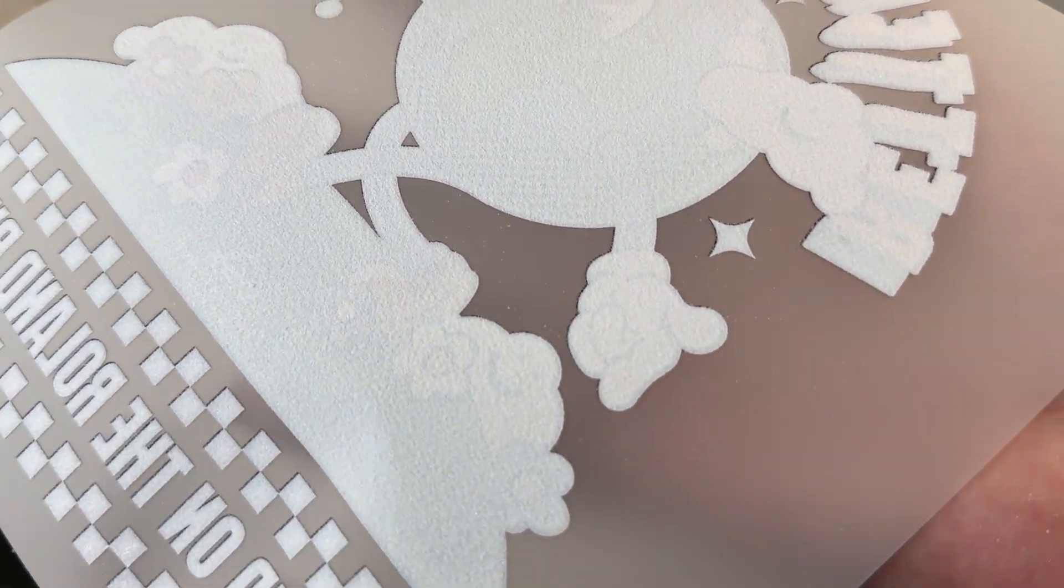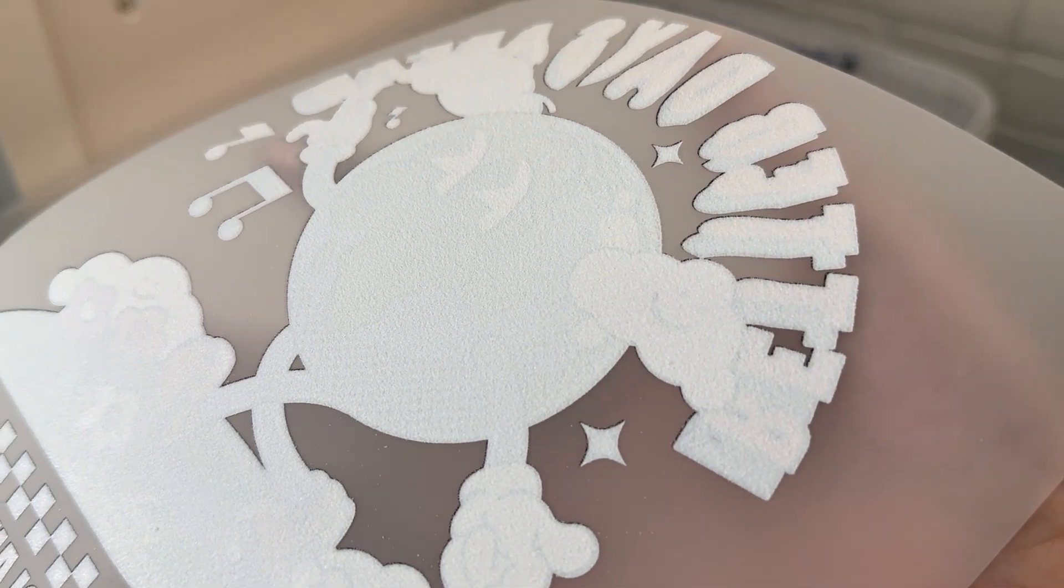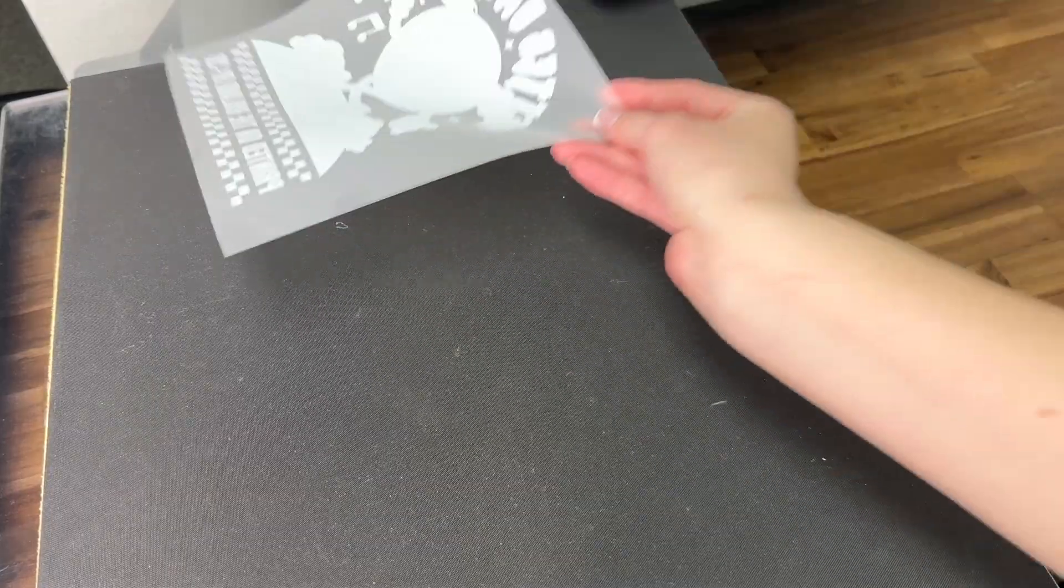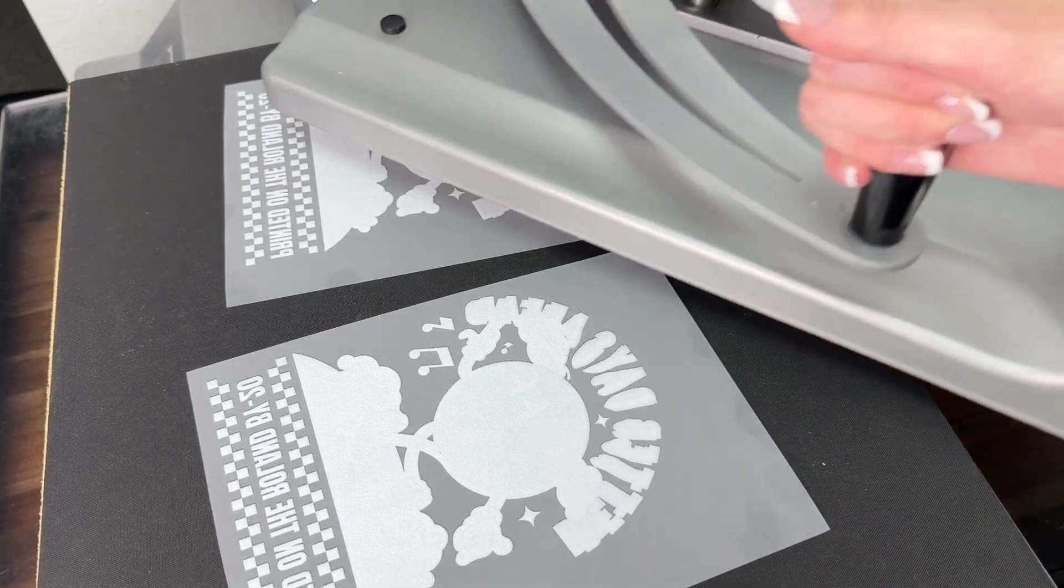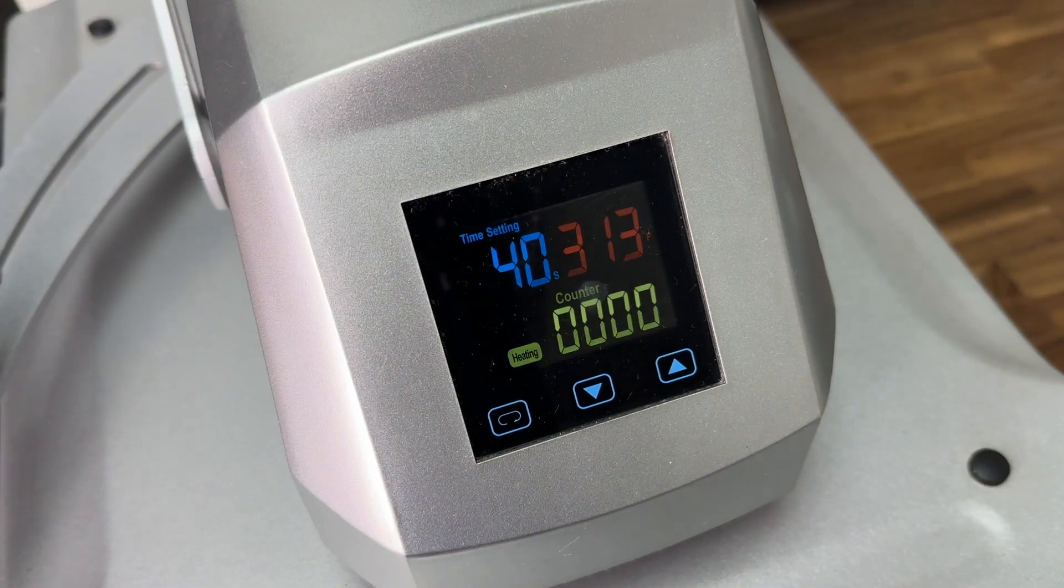Now that I have my prints all powdered, they're ready to be cured underneath a manual swing away heat press. Since I'm not using an inline shaker dryer, I'm going to be using my manual swing away heat press since it's the most efficient way to get my prints cured.